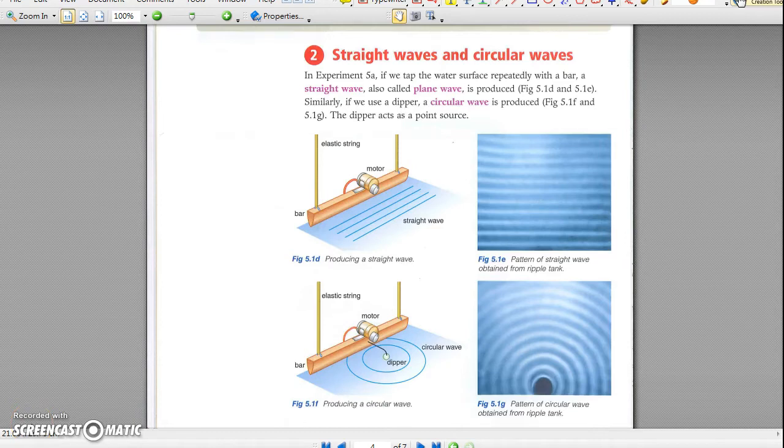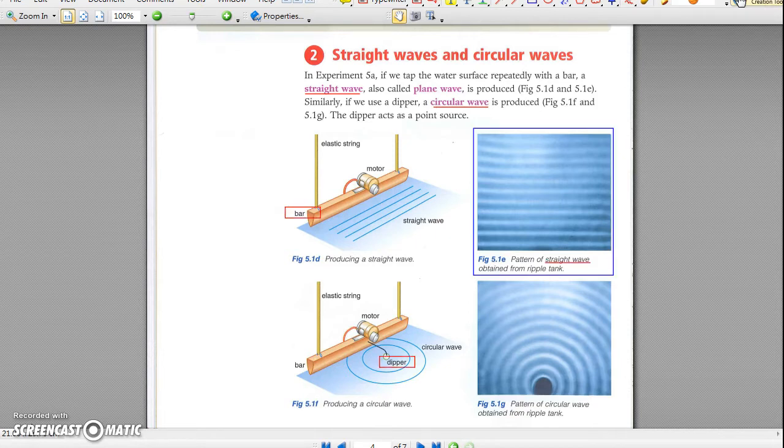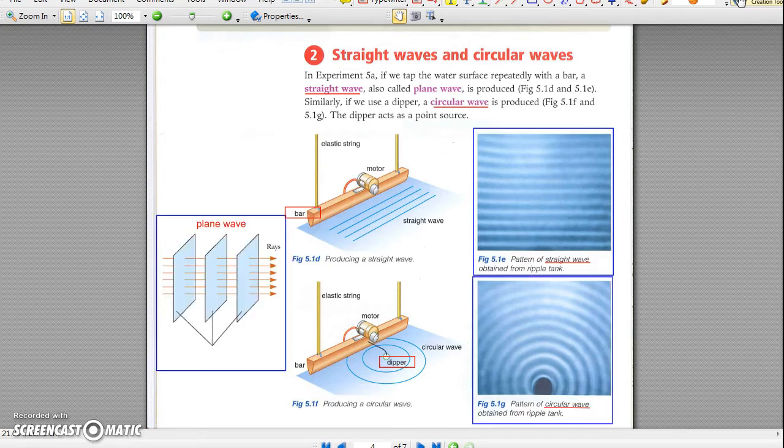Straight waves and circular waves. We may see a vibrating bar produces straight water waves and a vibrating dipper produces circular waves. Strictly speaking, plane waves are produced by a vibrating plane.